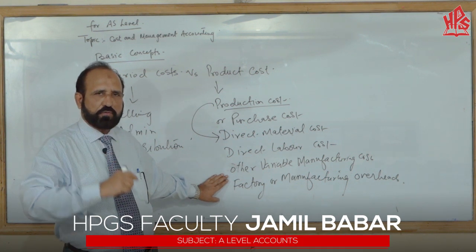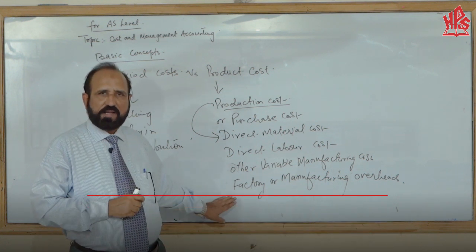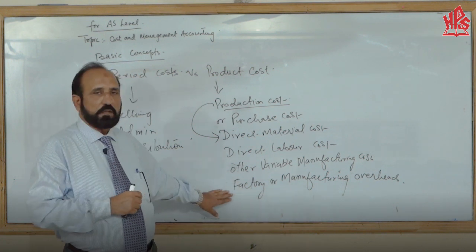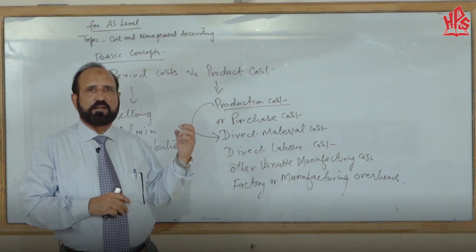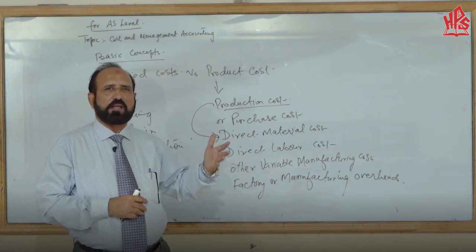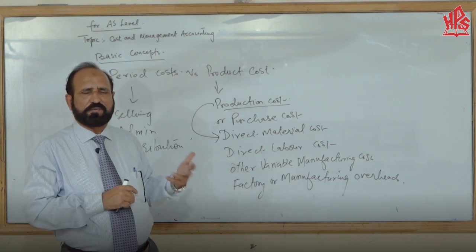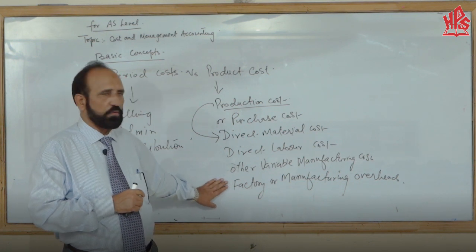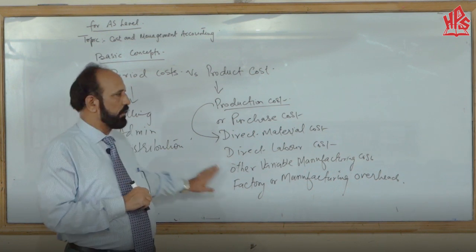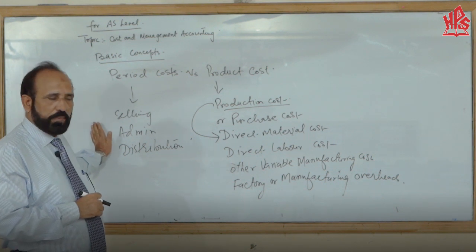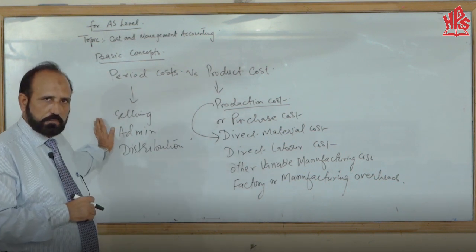Other expenses incurred in the factory include supervisor salary and manager salary, which are called indirect labor. Material used in the factory that is not identifiable in the product is called indirect material. Lighting expenses, heating expenses, and insurance of the building and machinery are also incurred in the factory — these are included in factory overheads. All these costs together form the product cost, while selling and administrative costs form the period cost.